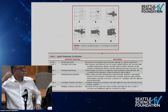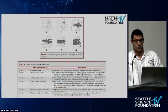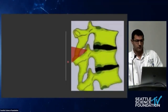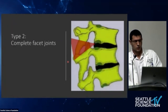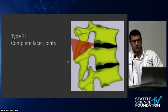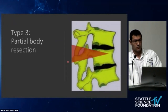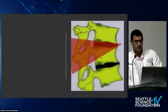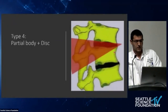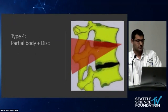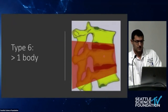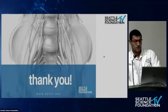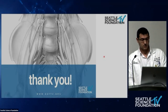A brief overview of the Schwab osteotomy classification, since a Schwab 4 was performed in this case: Type 1 — partial facet joint removal. Type 2 — complete facet joint removal. Type 3 — partial vertebral body removal. Type 4 — partial body plus upper disc space removal. Type 5 — complete body and disc removal. Type 6 — removal of more than one vertebral body.